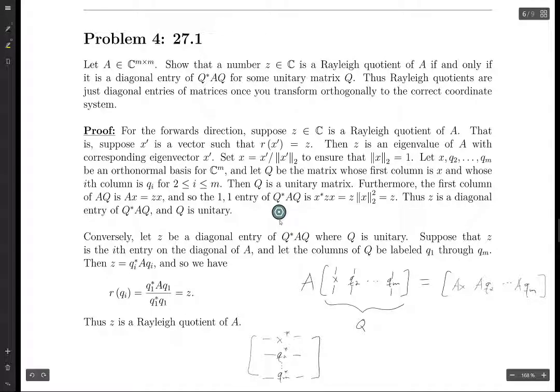If we take this and multiply by AX, AQ2, AQM. Then if we look at the 1, 1 entry, we're going to have X star AX. And then the 1, 2 entry is going to be X star AQ2, etc., etc. But the only thing we care about is this thing, because that's going to be X star AX.